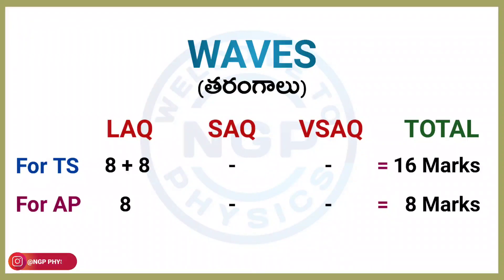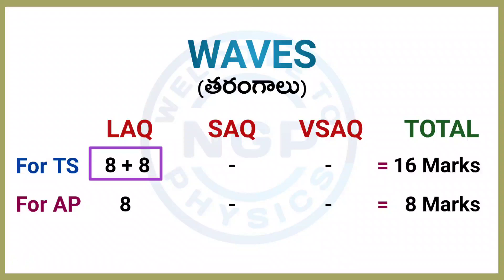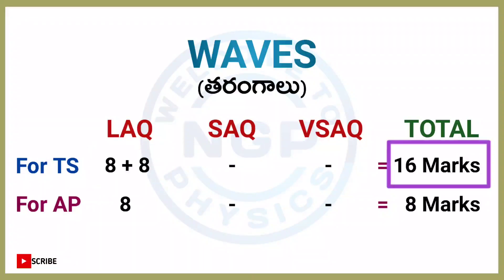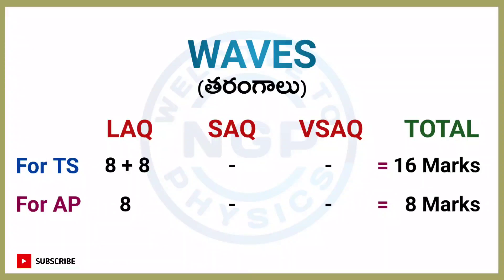For TS students, 2 LQs are there — 8 plus 8 — total weightage of this chapter is 16 marks. For AP students, each chapter has one LQ, one 8-marks question, so chapter weightage is 8 marks.